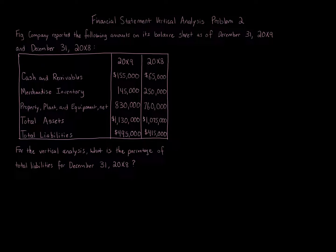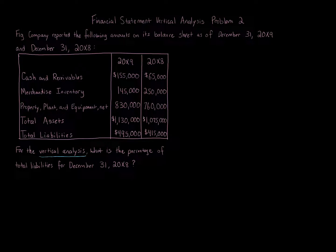Total liabilities: 20x9 $495,000; 20x8 $415,000. For the vertical analysis, what is the percentage of total liabilities for December 31st 20x8? We're doing vertical analysis.